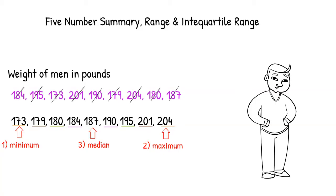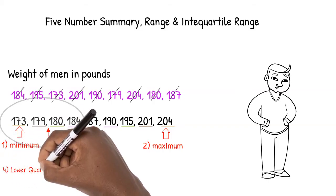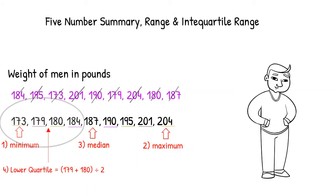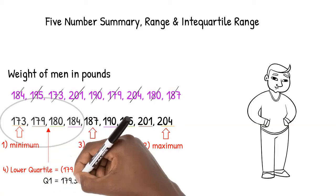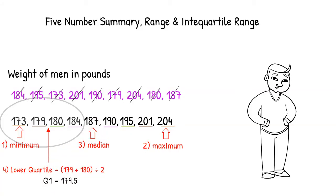The fourth number in our summary is the lower quartile. This is the median of the lower half of our numbers, disregarding the median. Since there are two numbers in the middle, we add them and divide by two to find the average of those two numbers. Our lower quartile, otherwise known as Q1, is 179.5 pounds.